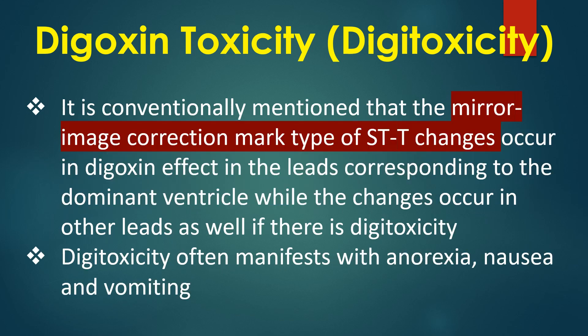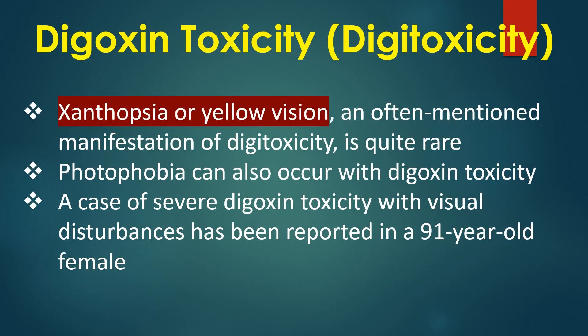It is conventionally mentioned that mirror-image correction-mark type STT changes occur in digoxin effect in the leads corresponding to the dominant ventricle, while the changes occur in other leads as well if there is digitalis toxicity. Digitalis toxicity often manifests with anorexia, nausea and vomiting. Xanthopsia or yellow vision, though often mentioned, is quite rare. Photophobia can also occur with digoxin toxicity.